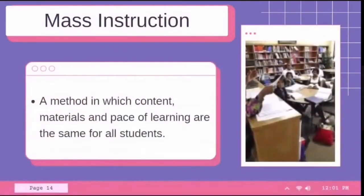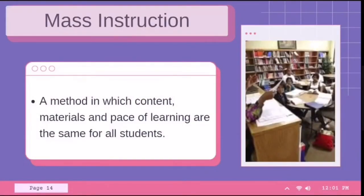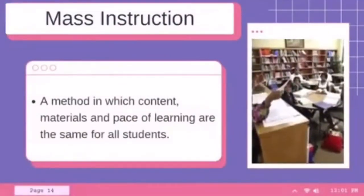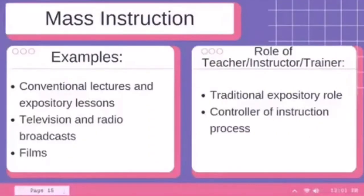Lastly, we have mass instruction. Mass instruction is the opposite of individualized instruction — it is a method in which content, materials, and pace of learning are the same for all students in a classroom or course. Examples include conventional lectures and expository lessons, television and radio broadcasts, and films. The role of the teacher is the traditional expository role and controller of the instruction process.